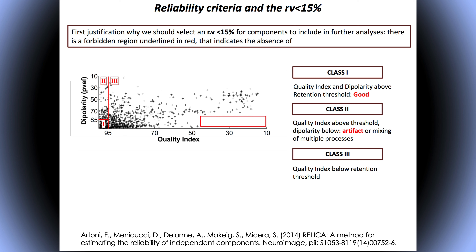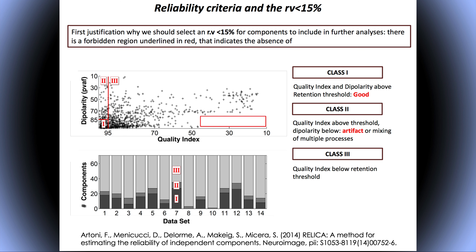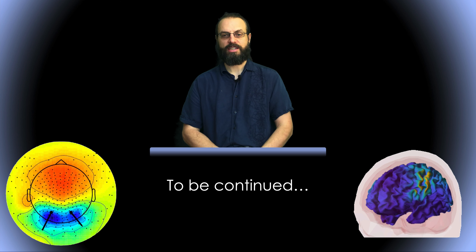What's very interesting is that when components have a low quality index — shown in the red box — there are no components with low quality index that are also not at least 85% dipolar. So if you're 85% dipolar, you usually have a relatively high quality index. There were 14 datasets, and the class distribution varies between datasets — some have more of one class versus another. This is the end of this presentation, and I'll see you on the next one.